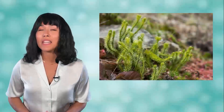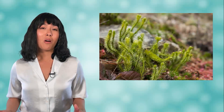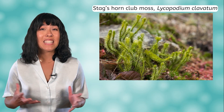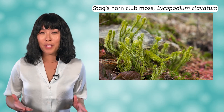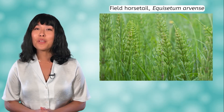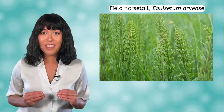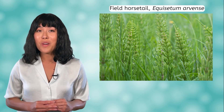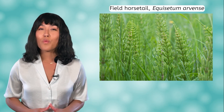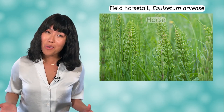In addition to many species of fern, the pteridophyte phylum also includes club mosses, such as the stag's horn, Lycopodium clavatum, and horsetail, such as the field horsetail, Equisetum arvense. When bunched together, these do actually resemble a horse's tail, which is why the genus has the equi prefix — it means horse.